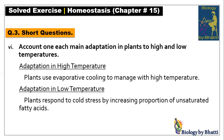Short question number six: describe one main adaptation in plants to high and low temperatures. In high temperatures, plants use evaporative cooling — transpiration rate increases. For low temperature adaptation, they respond to cold stress by increasing the proportion of unsaturated fatty acids in the plasma membrane, which prevents it from solidifying and maintains membrane fluidity so transportation across the plasma membrane remains possible, and plants survive.